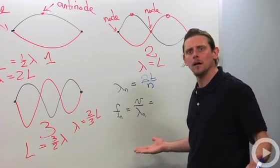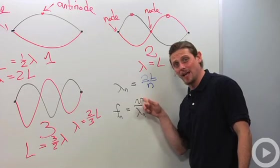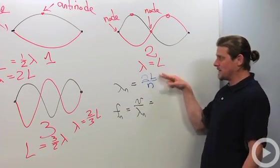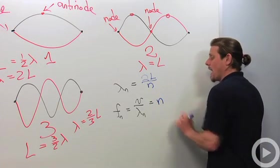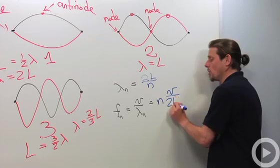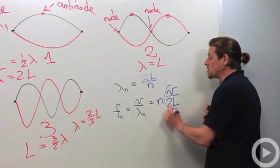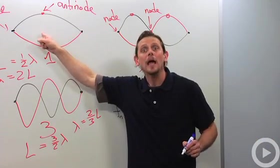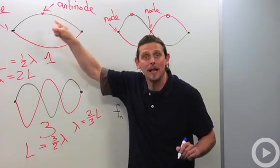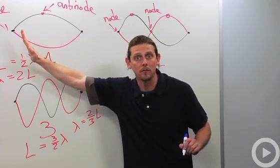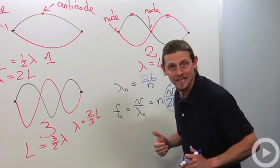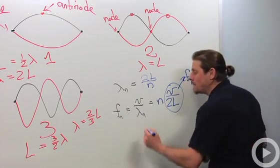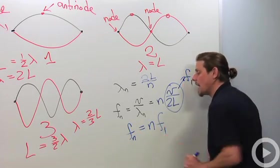Well what about the frequency? Frequency is always equal to speed divided by wavelength. So when I take this speed and I divide by this wavelength, I end up getting N times V over 2L. Now, V over 2L is the lowest frequency that we get. It's the frequency associated with this one right here, which only has half a wavelength showing. That's called the fundamental frequency, and we'll call it F1. So that means that Fn is N times F1.